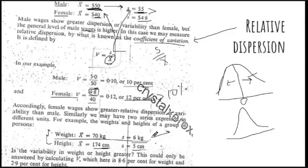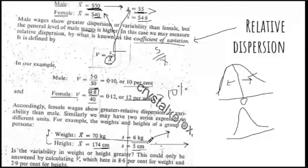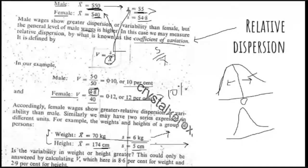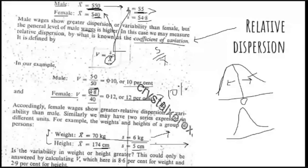If you calculate the coefficient of variation for each distribution, based on this comparison you can tell which distribution has more dispersion. For example, the coefficient of variation for weight is 8.5 and for height is 2.8, so you can compare these two distributions.